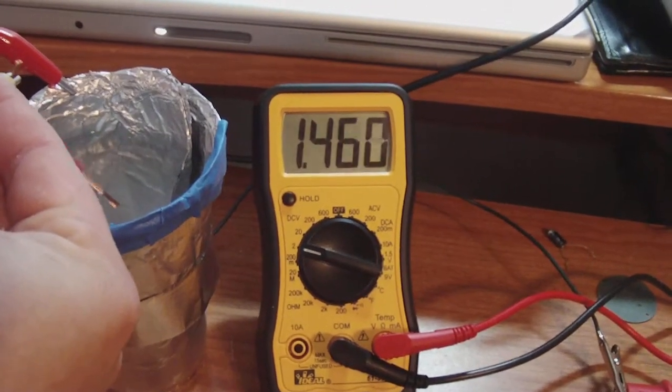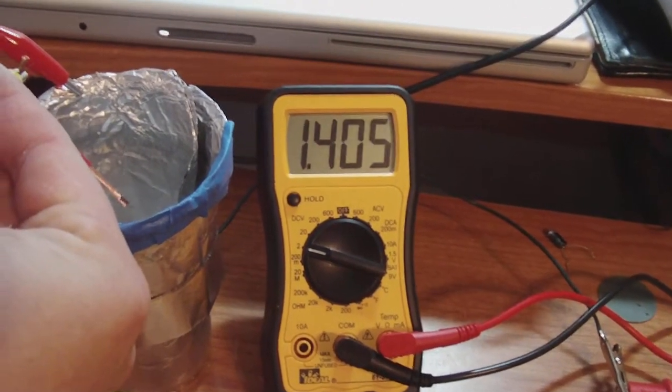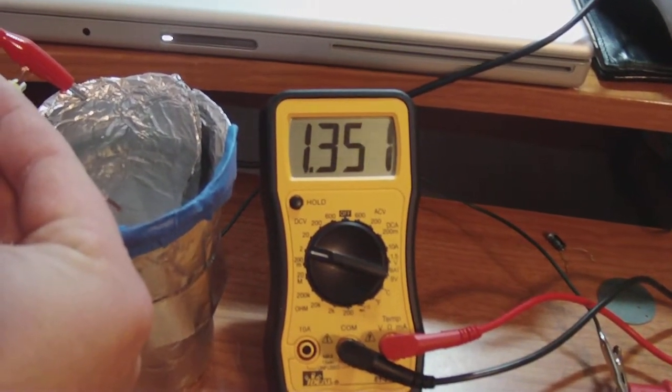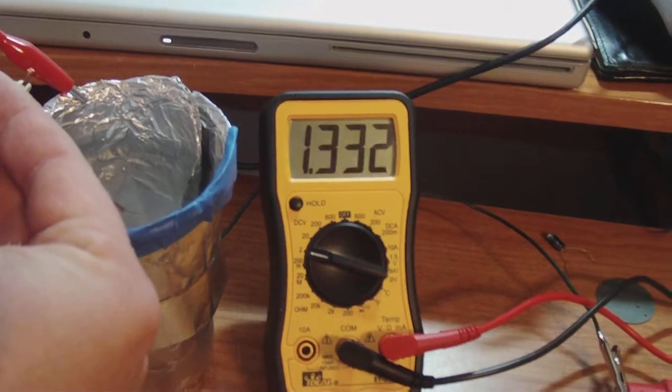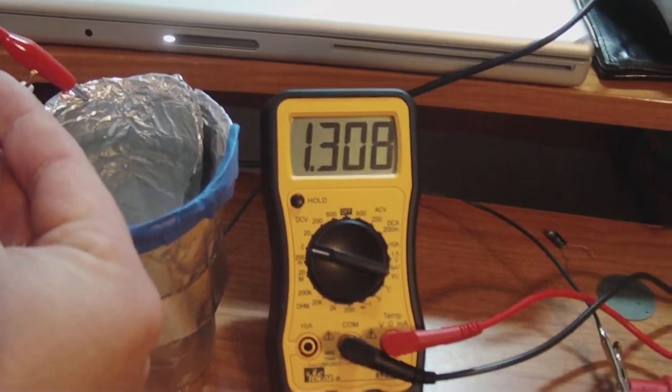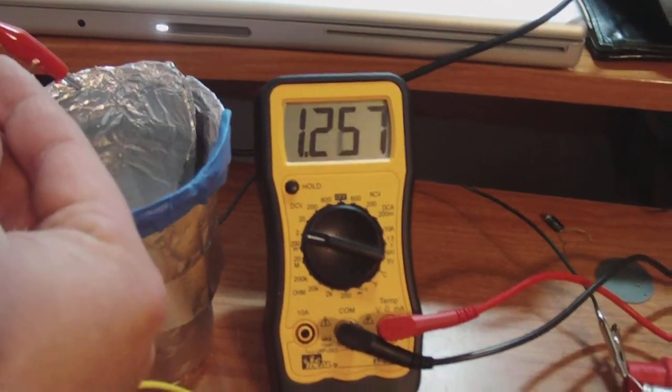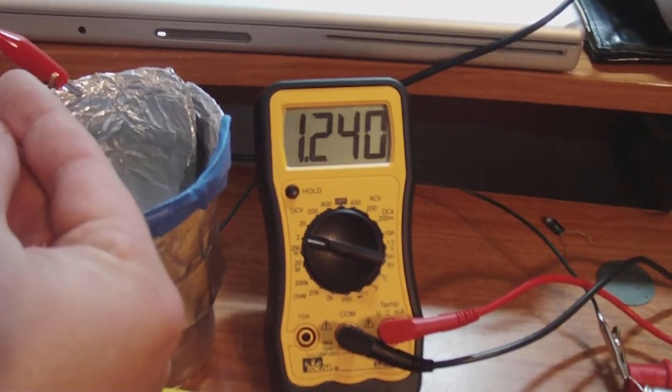As you can see, it's draining the capacitor. And it's going to drain it to below the voltage that was in the battery itself. It was at 1.290, 1.288. There we go, way below the voltage. So technically it's doing the opposite.